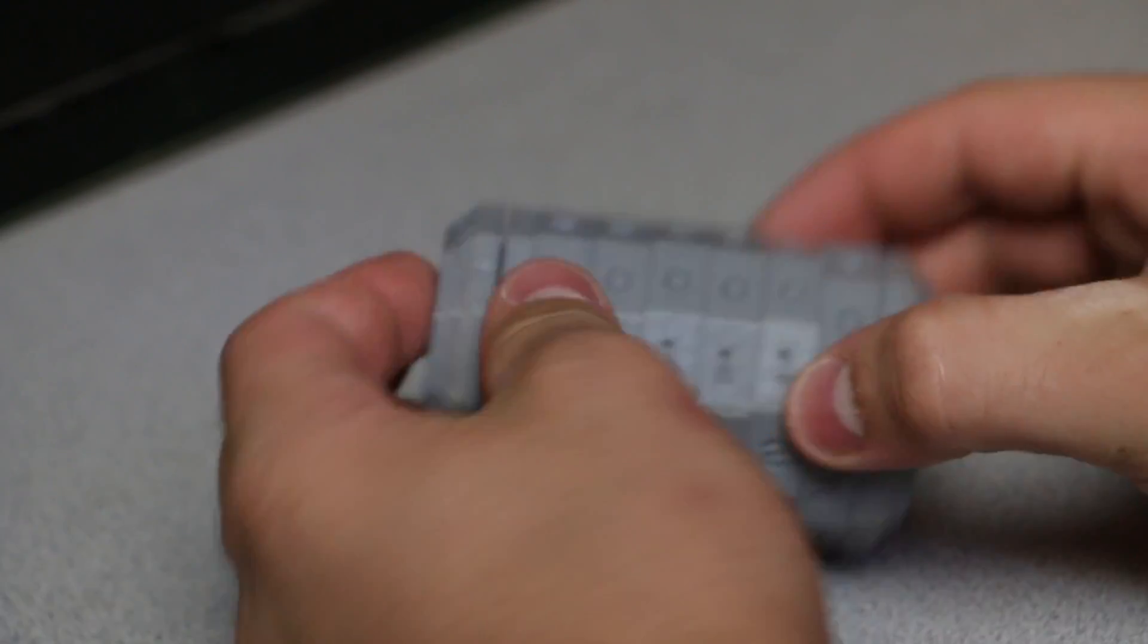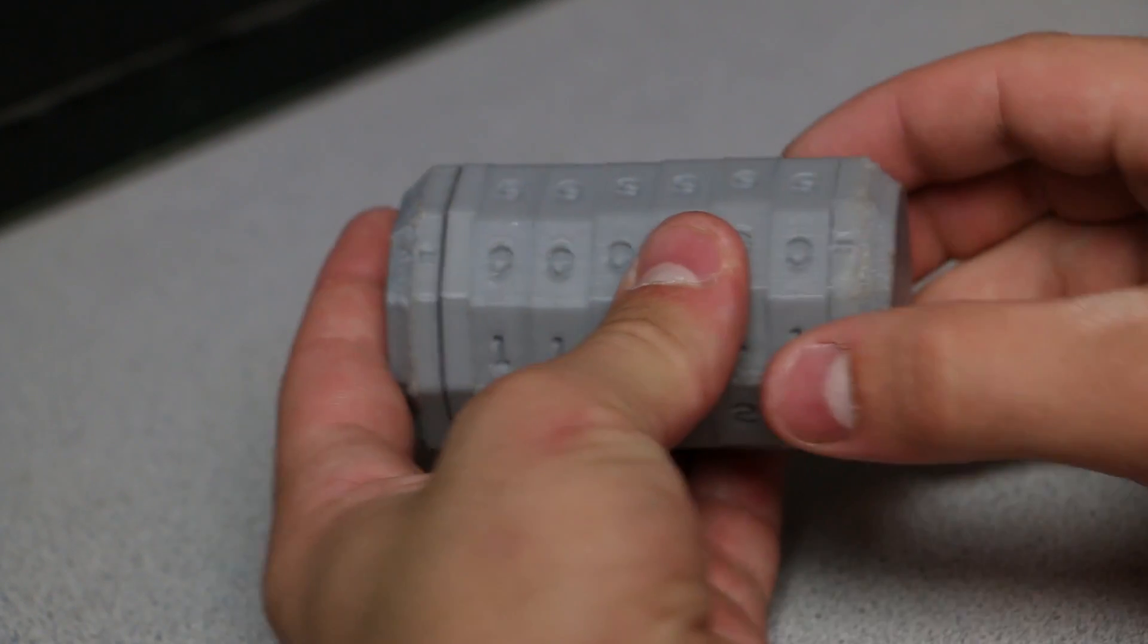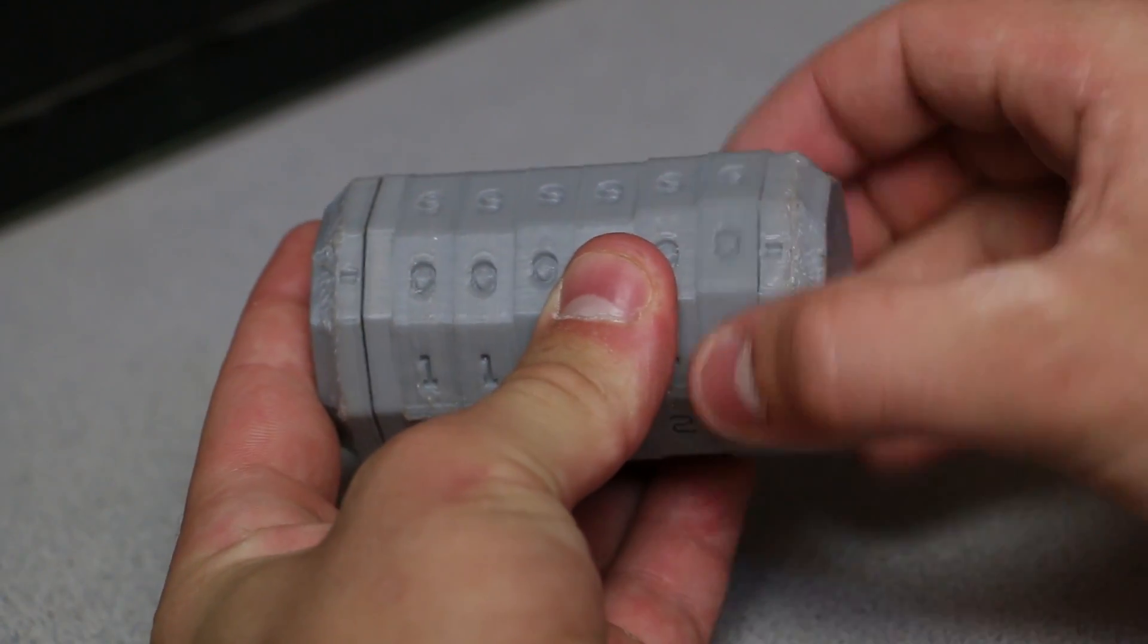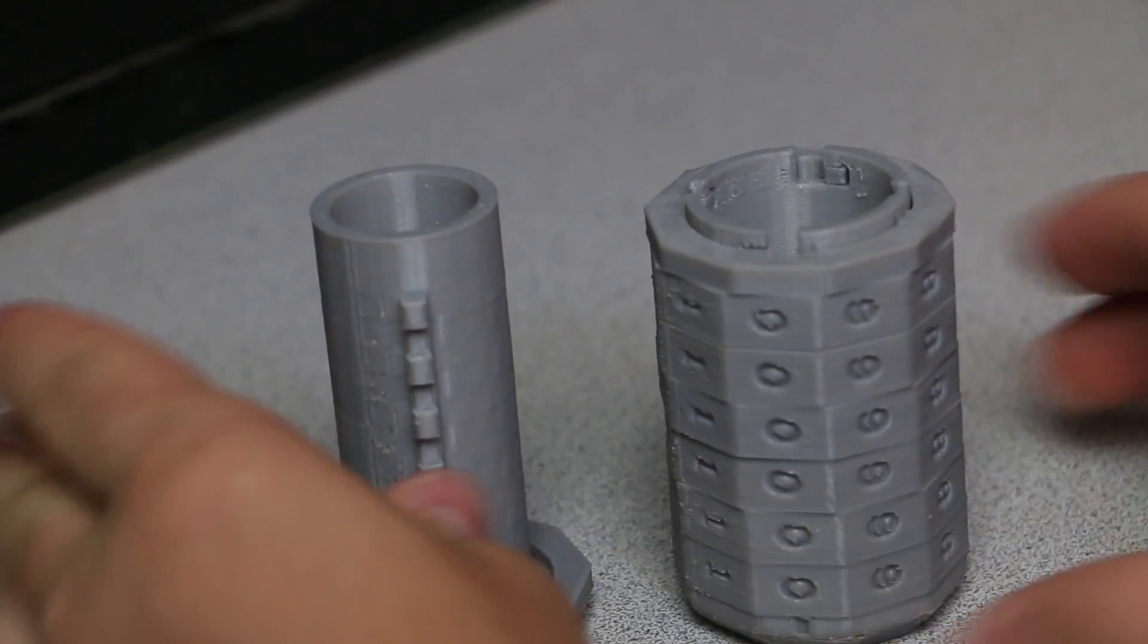Today we're going to be 3D printing a lock. This lock is really cool, it's got six digits, which is way more than you would ever need, and it is very awesome. This lock also has interchangeable codes, so you can put whatever code on this lock that you want.